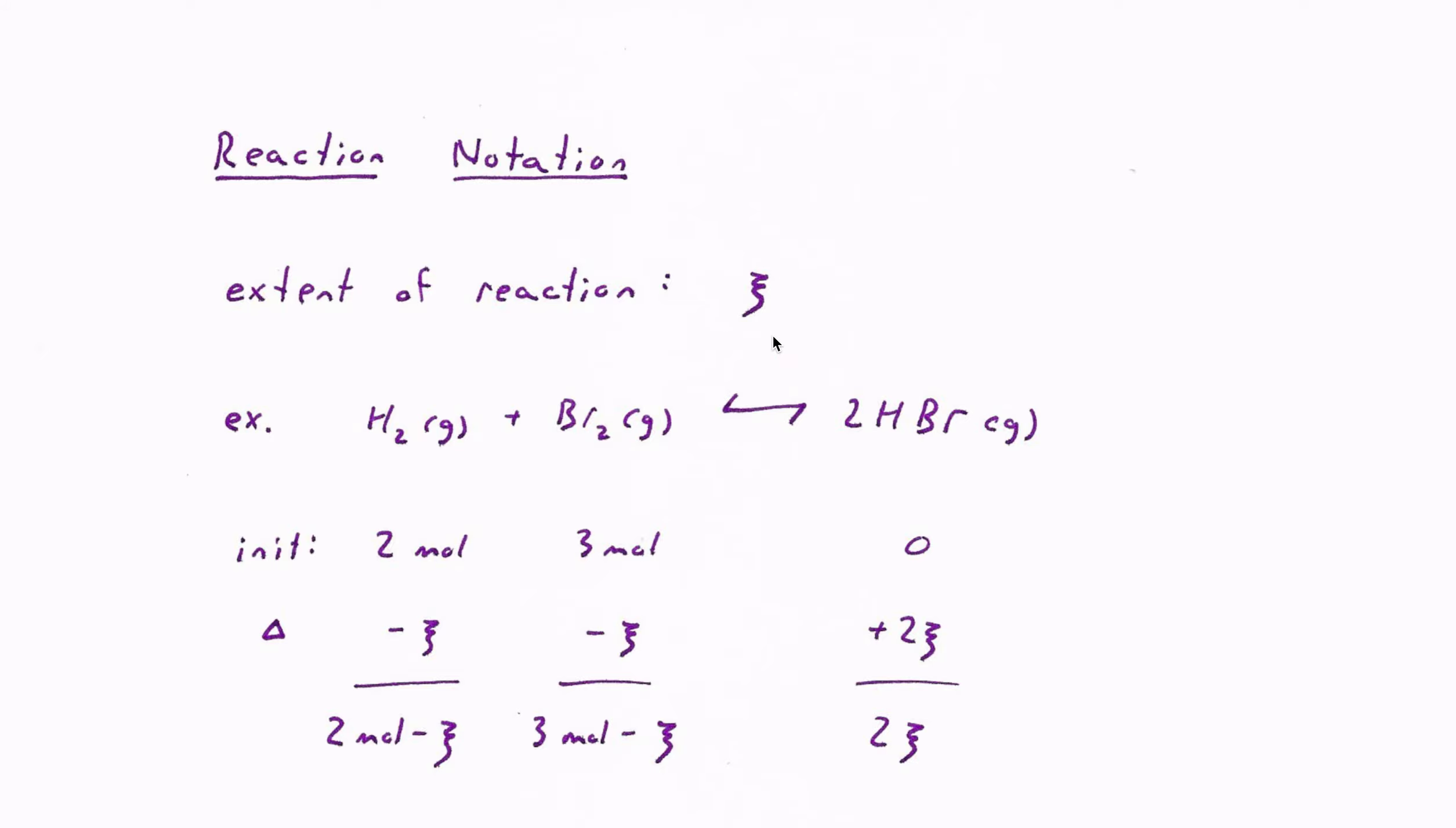The first bit of notation we need is this concept called the extent of reaction, represented by the Greek letter XI, spelled XI. But since that Greek letter is not terribly familiar and it's a little bit difficult to draw and XI is hard to say, often we end up calling that variable squiggle instead of XI.